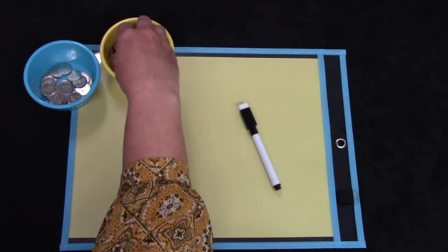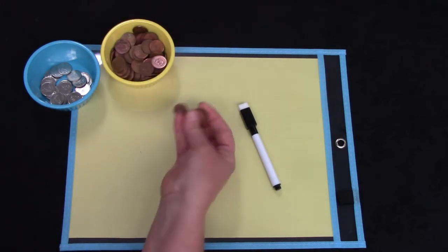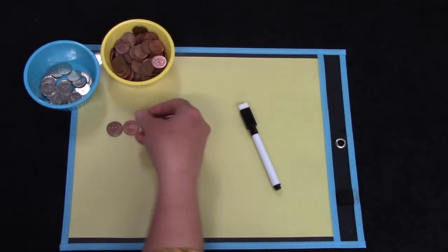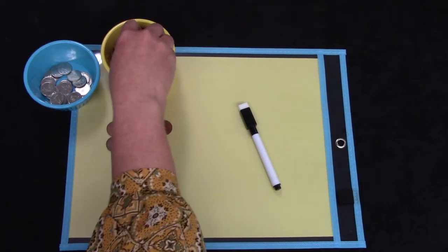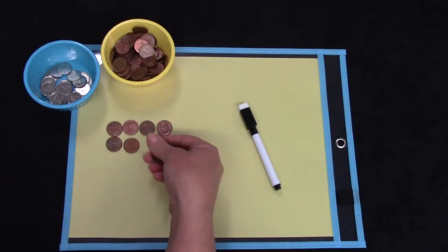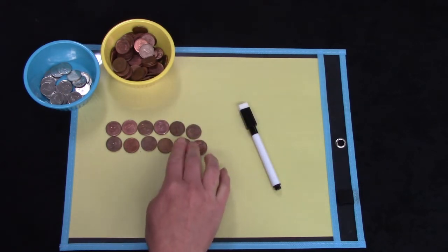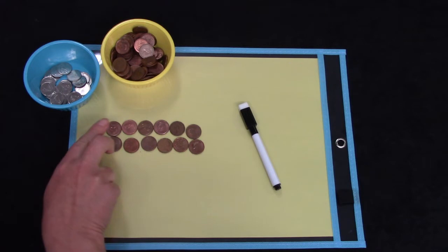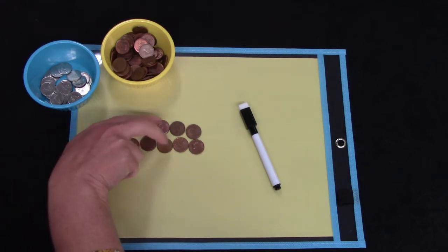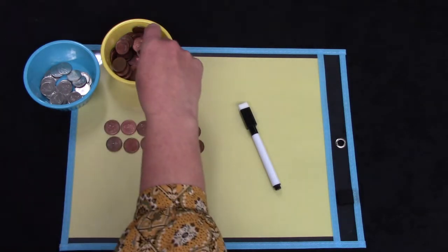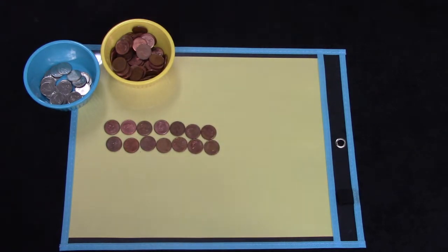And when you have your pennies I'm going to have you find 14 of them. I'm going to count them out. I'm going to put mine in rows of 2 because I find that easier to count. Let's see how many I have so far. 2, 4, 6, 8, 10, 12. And now I have 14.